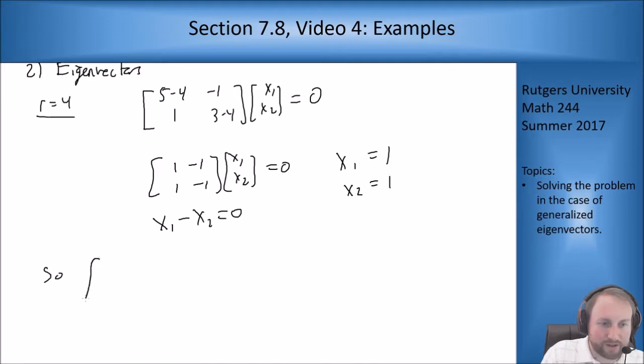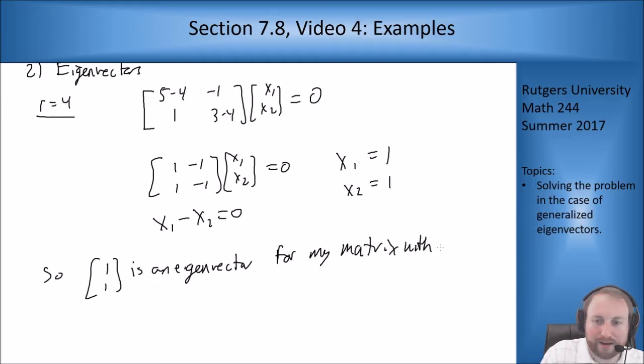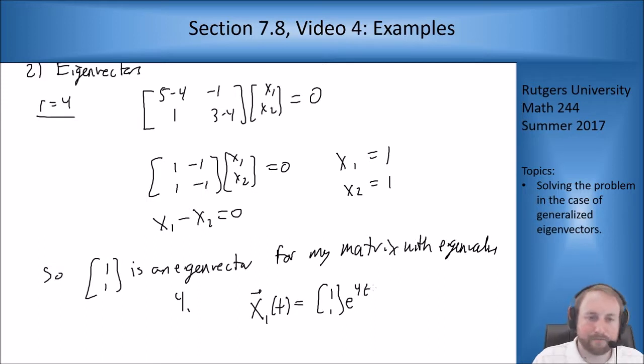I'll pick x₁ to be 1, x₂ to be 1. So [1,1] is an eigenvector for my matrix with eigenvalue 4. As part 1 of my solution, I get [1,1]e^(4t). That we know is going to be there. But we only found one eigenvector.